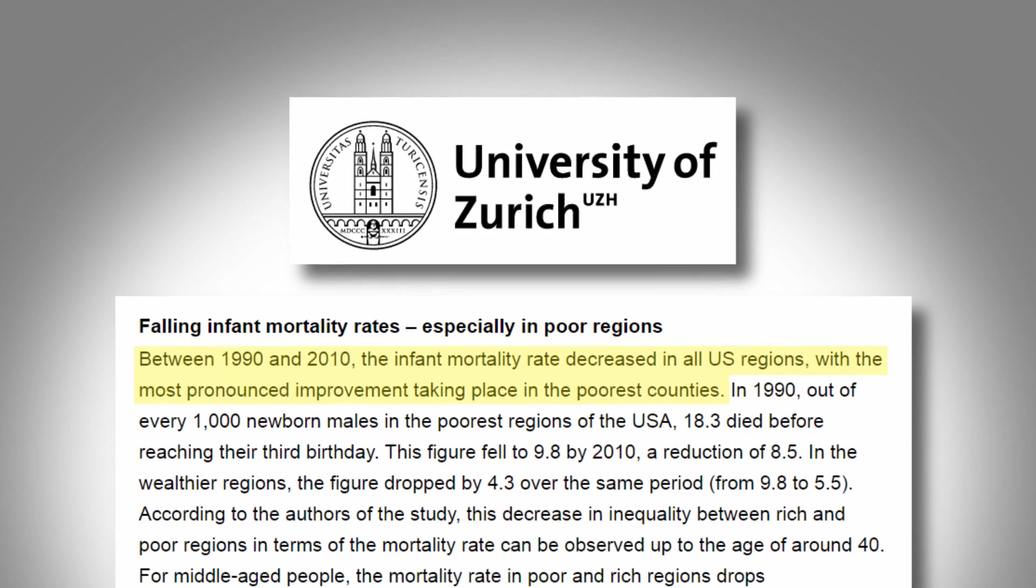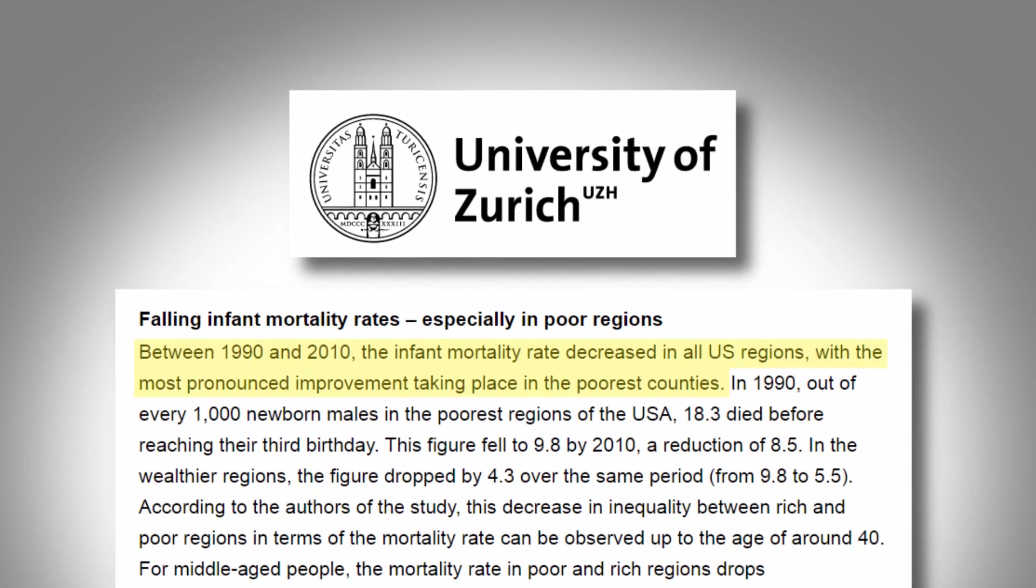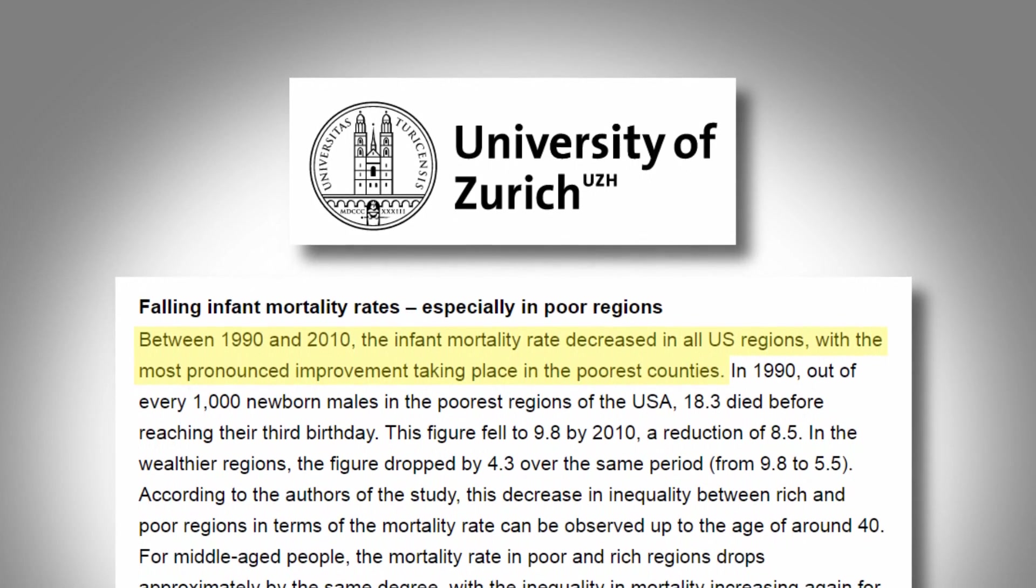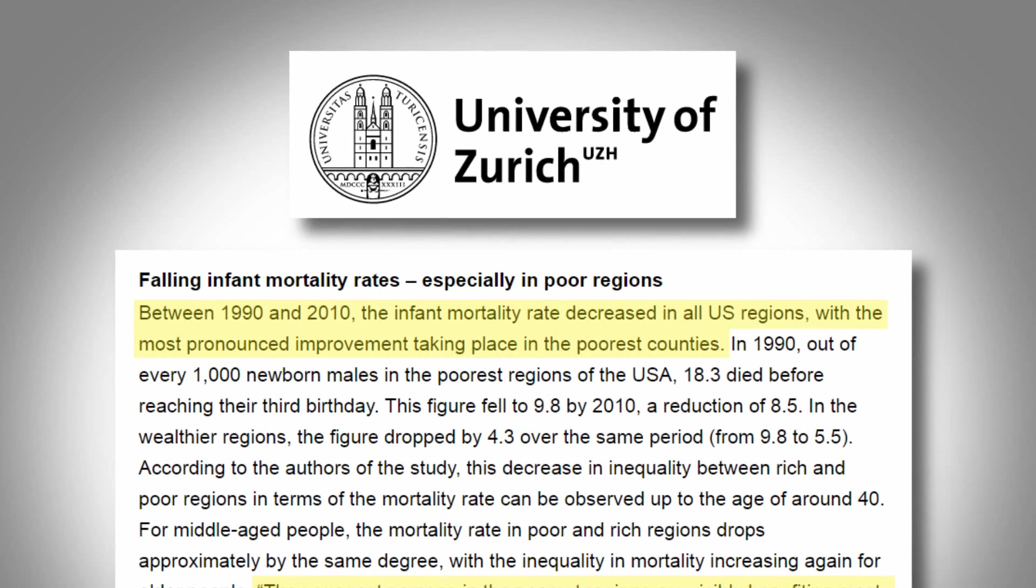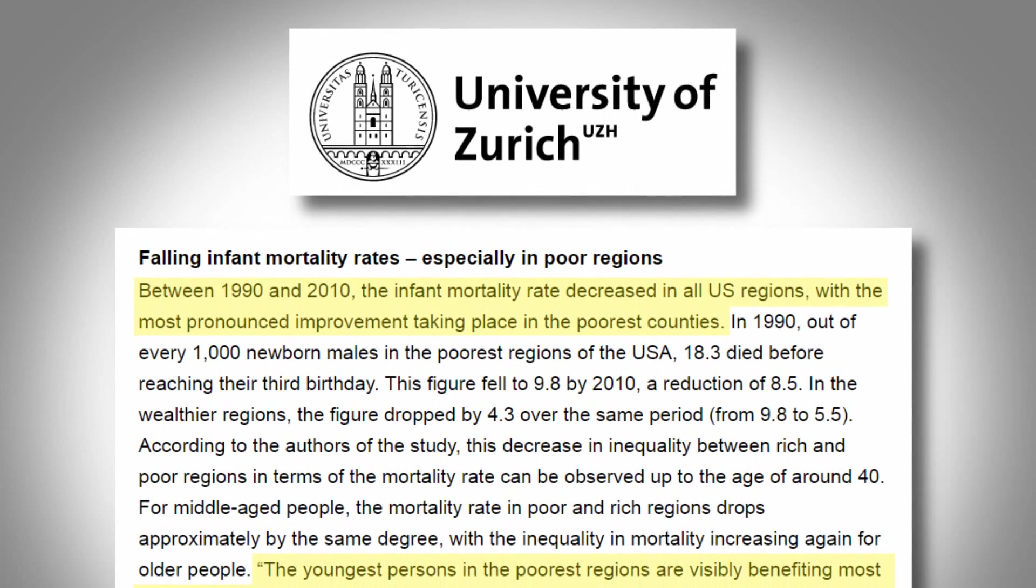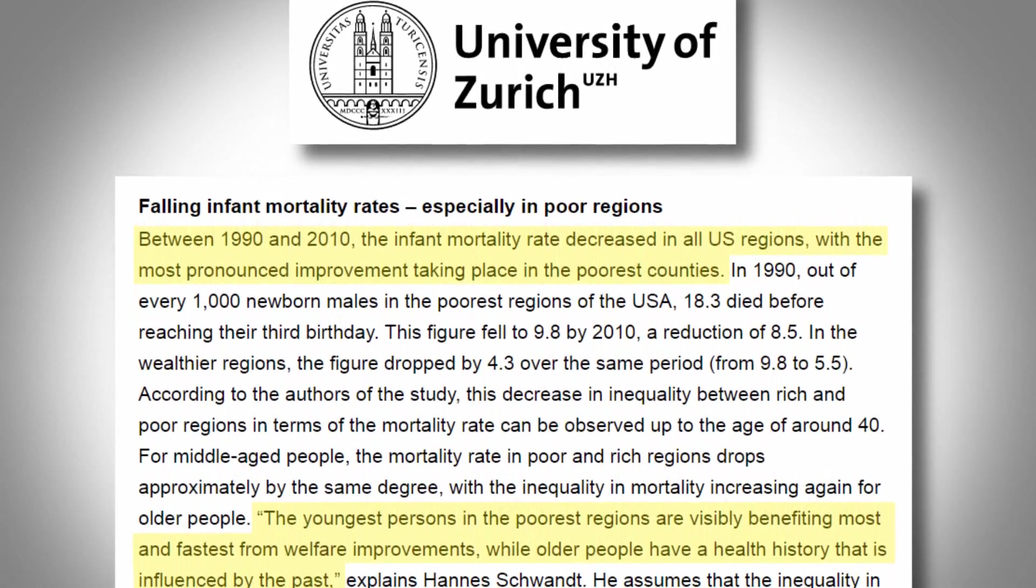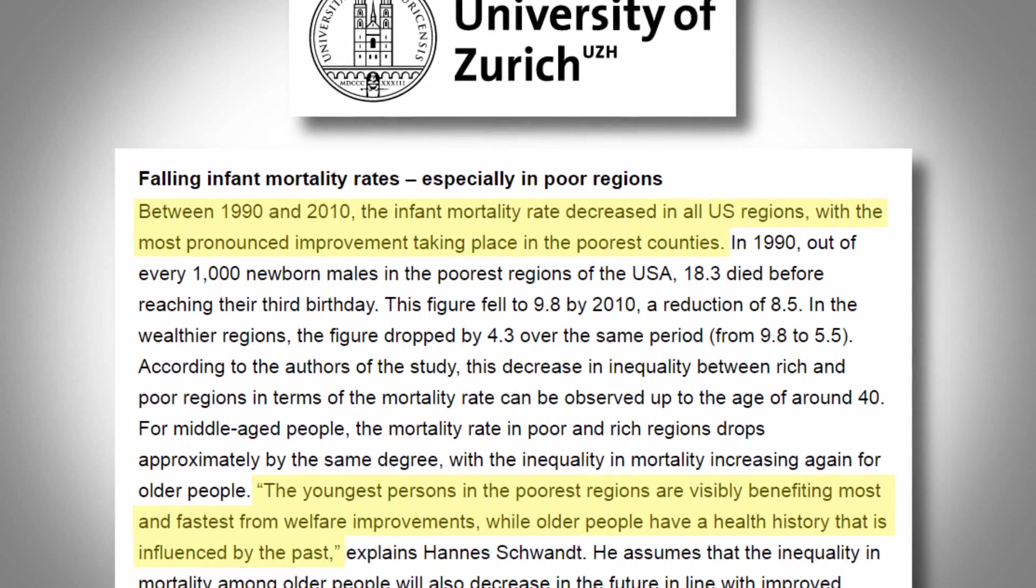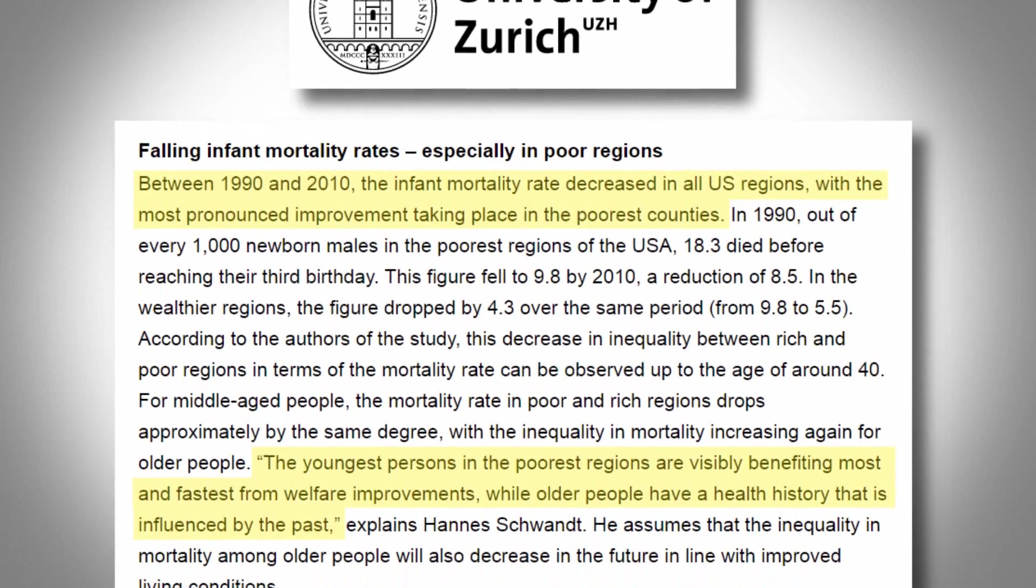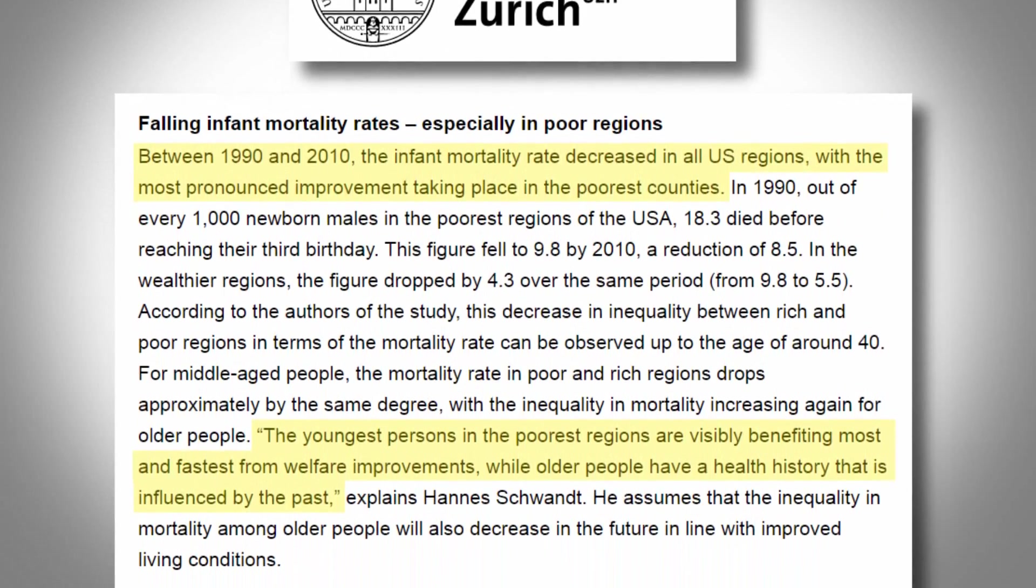The study found the differences in mortality rates among wealthier and poorer adults to still be significant. This is possibly explained by children benefiting more from public assistance programs, while the damage to the long-term health of economically disadvantaged adults who didn't benefit from such programs has already been done.